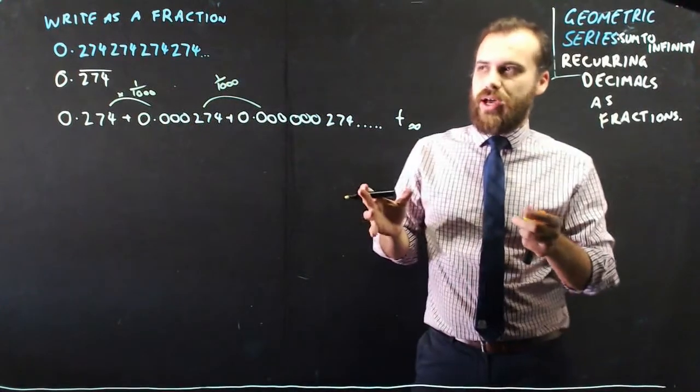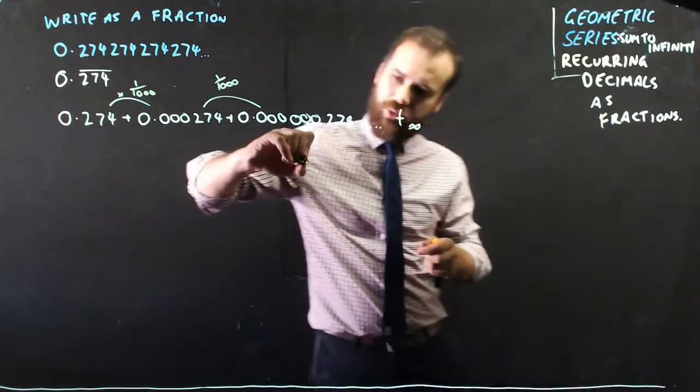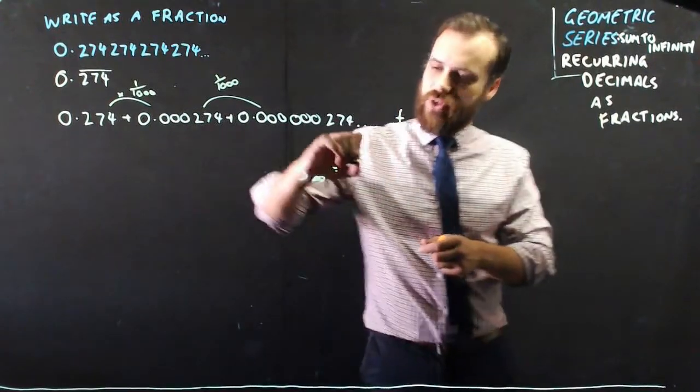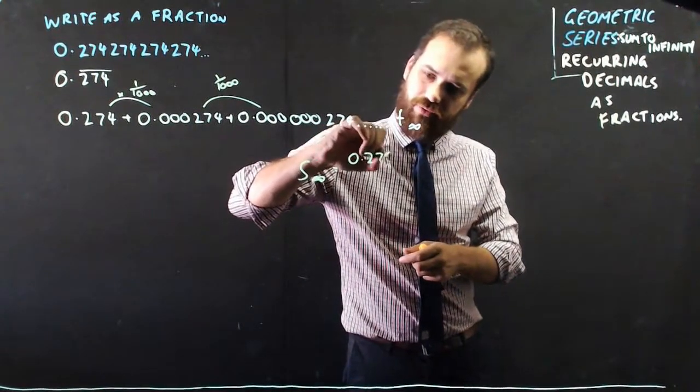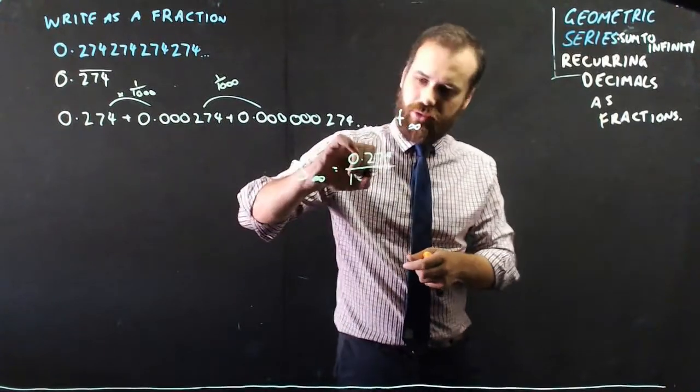Now that we've got that, we can simply use our sum to infinity formula. Sum to infinity is equal to the first term, 0.274, over 1 minus the common ratio.